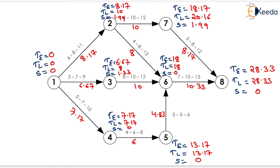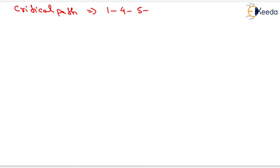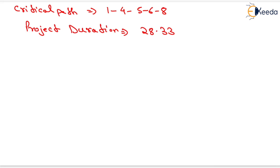We have calculated the TE, TL, and slack for each event. The events having 0 slack are known as critical events, and the activity joining the critical events is known as a critical activity. Activity 1-4 is critical because the slack of events 1 and 4 is 0; similarly 4-5, 5-6, and 6-8 are critical activities because their slack is 0. The critical path is 1-4-5-6-8, and the project duration equals 28.33 units. Thank you very much, students.